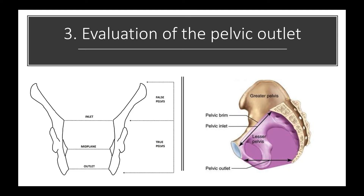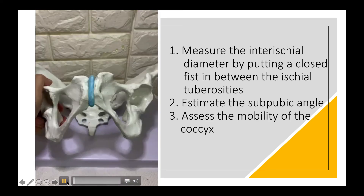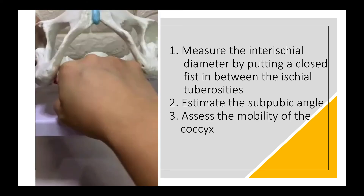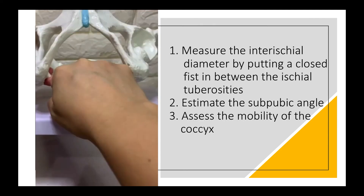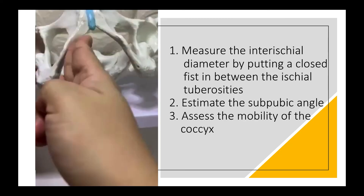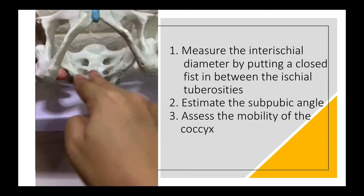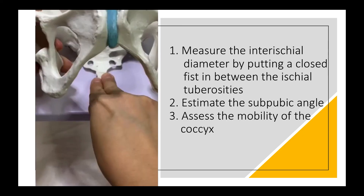Lastly, we evaluate the pelvic outlet. To evaluate the pelvic outlet, we do the following steps. First, measure the inter-ischial diameter by putting a closed fist between the ischial tuberosities — normally this should accommodate four knuckle bones. Next, estimate the sub-pubic angle, which should normally be at least 90 degrees. And lastly, assess the mobility of the coccyx.